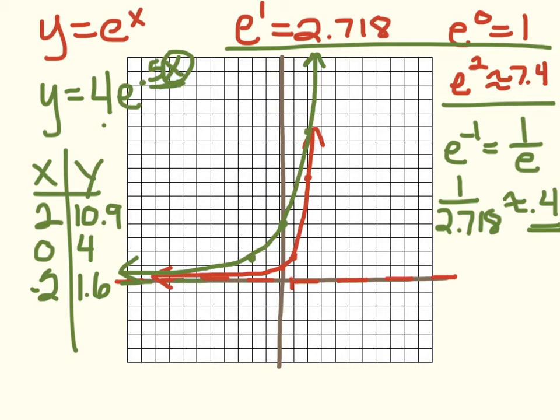So, now you've got three good points that you can use. Our asymptote didn't move. Our asymptote is still at Y equals 0. The 4 stretched it up a little bit, giving us this graph here.